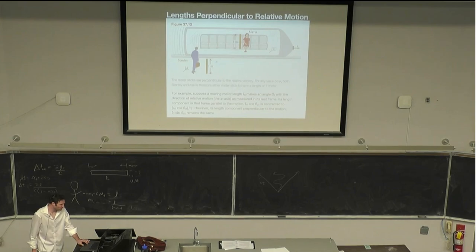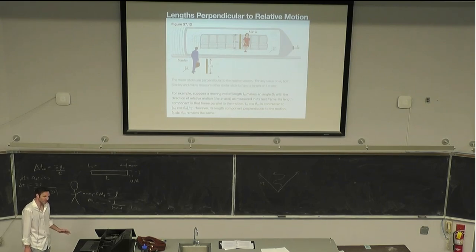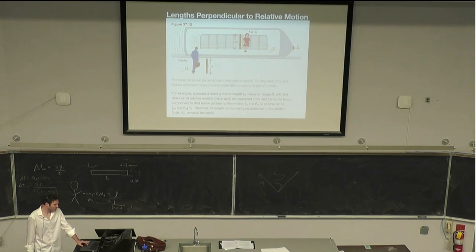So we're looking at lengths, now we're looking at lengths going in this direction. The meter sticks are perpendicular to the relative velocity. For any value of u, both Stanley and Mavis measure either stick to have a length of one meter because the moving rod of length L0 makes this angle theta naught with the direction of relative motion, this direction here.